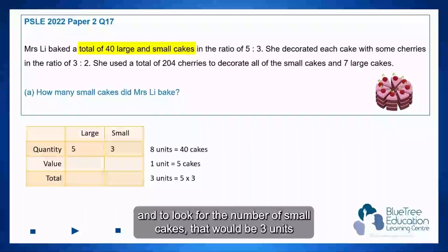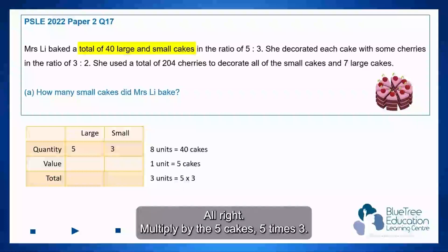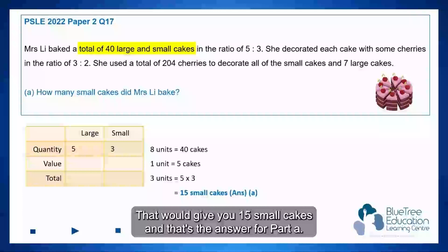And to look for the number of small cakes, that would be 3 units. And that is why we take this 3, multiply by the 5 cakes. 5 times 3, that will give you 15 small cakes. And that's the answer for part A.